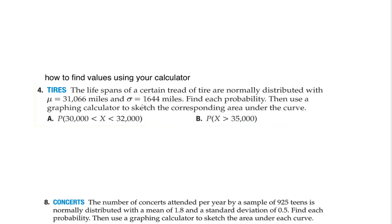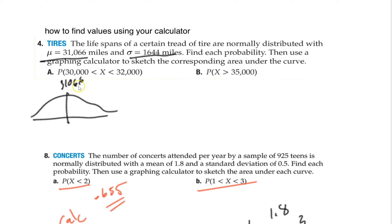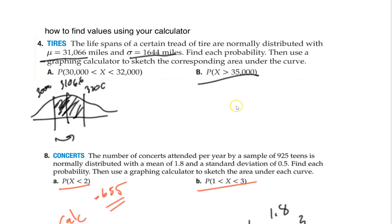Let's do one more. The reason I want to do this one is because the numbers are larger, but the same idea applies. Your mean is 31,000 and your standard deviation is 1,644. Find the probability between 30,000 and 32,000. I'll draw it: 31,000 in the middle, 30,000 to the left, 32,000 to the right. Lower bound, upper bound — plug it in. I'll trust you to do that calculation.